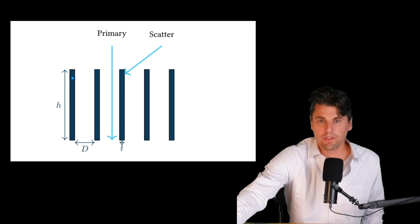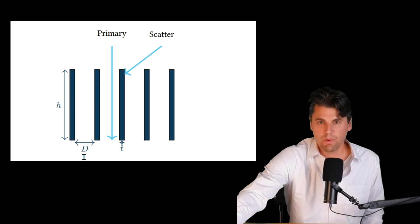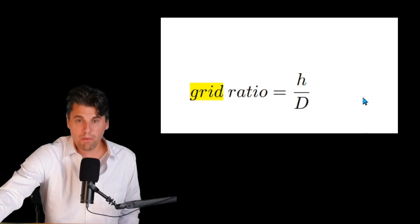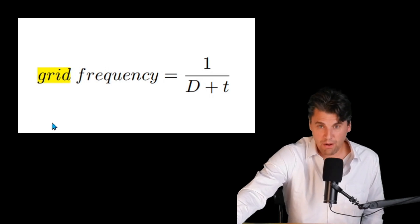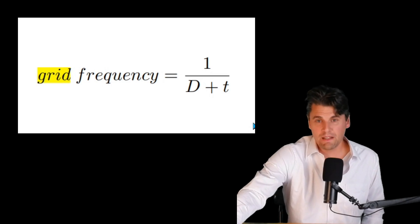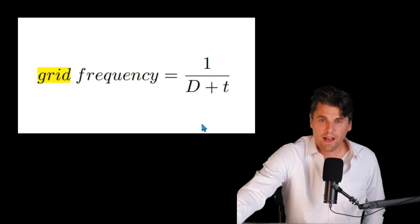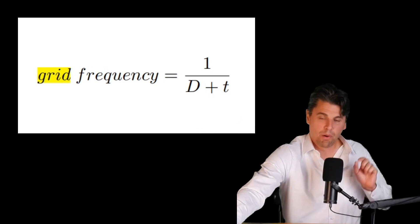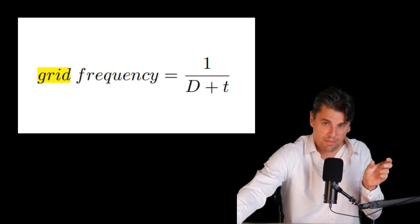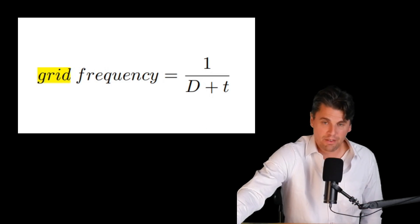We call these septa. H is the height of the septa, D is the distance between the septa, and t is the septa thickness. The grid ratio is the ratio of the height divided by the distance between the septa. The grid frequency describes how often the grid repeats itself — one divided by (d + t) — accounting for both the gap between septa and the septa size themselves.